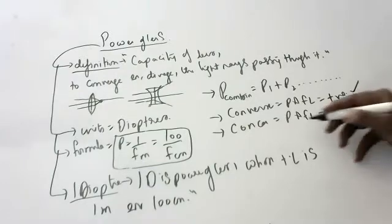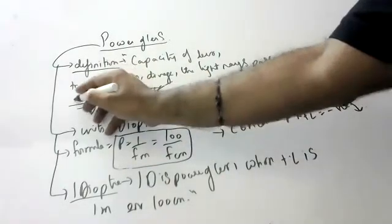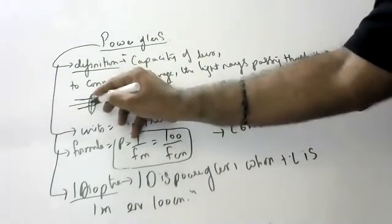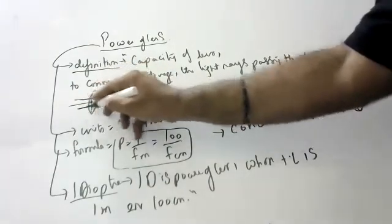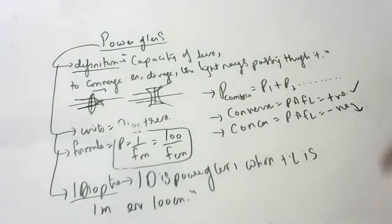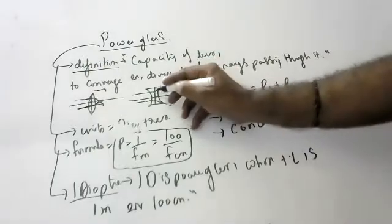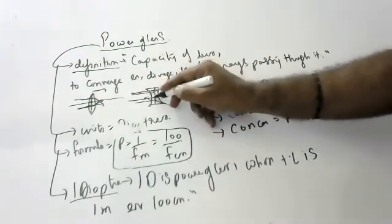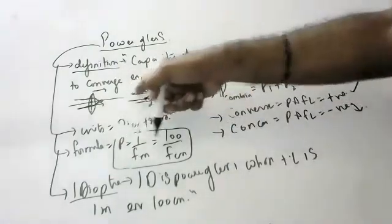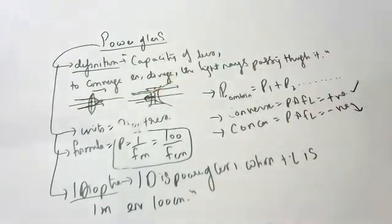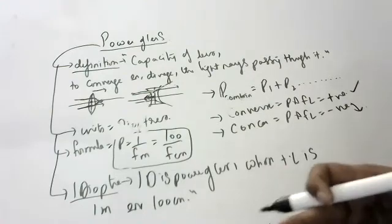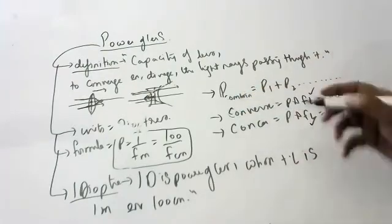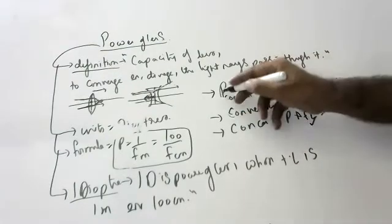In a convex lens, light rays are coming and converging. We measure the distance in the same direction as the light rays, so it is positive. In a concave lens, light rays are coming but we take distances against the light direction, that's why we take negative. Whether it is a lens or mirror, concave is negative and convex is positive. Power is compulsory only for lenses. The power of combination is P1 + P2.